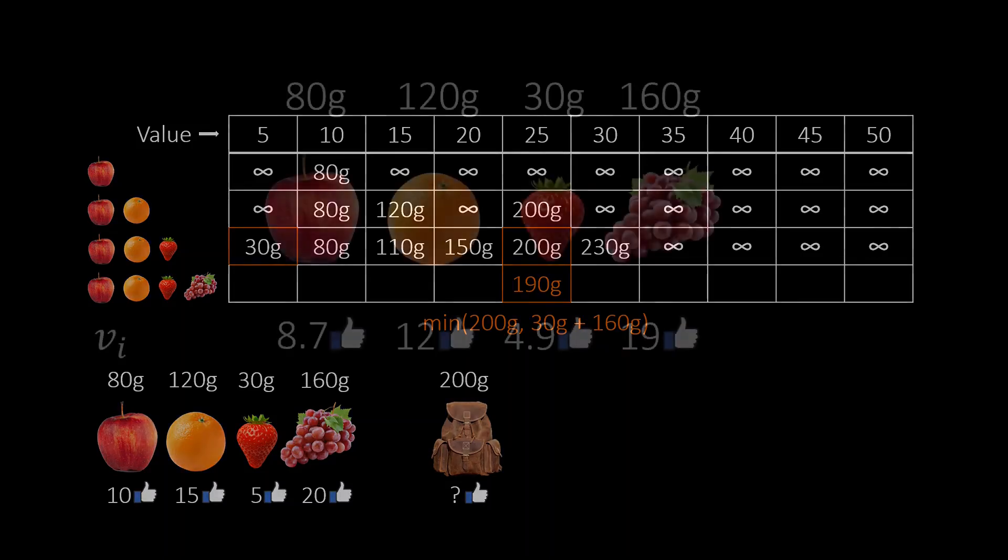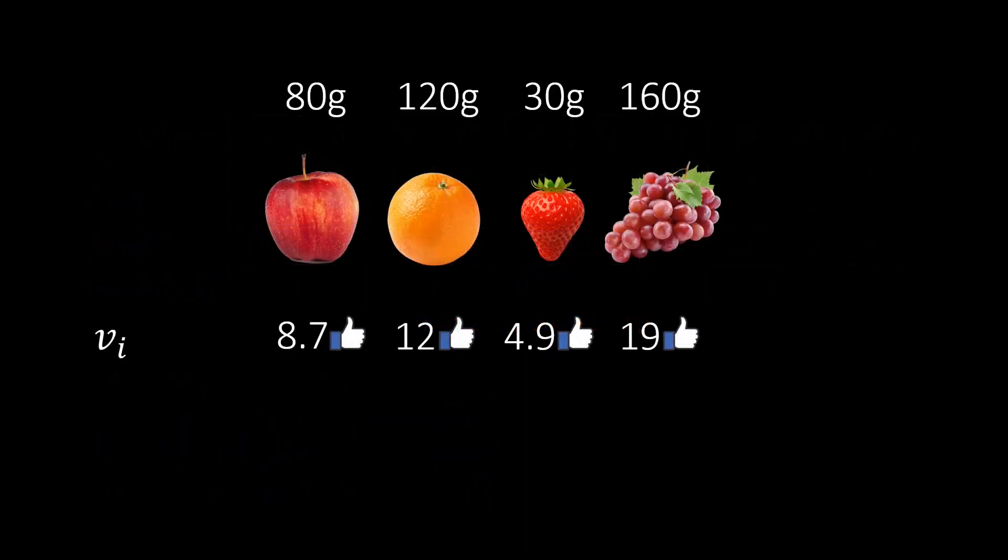Unfortunately, we will not always be this lucky. This leads to the table having many more columns. In general, the size of the table grows exponentially in the number of items. So how can we make sure the table does not become too large? Maybe we can slightly change the values of the items so that the table has fewer columns. This is exactly the idea of our FPTAS for the knapsack problem.